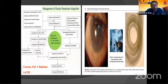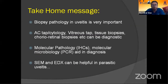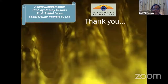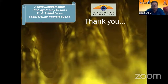Professor Rao et al. has shown that various clinical examination and investigative procedures are helpful for ocular inflammation. Live examination of the parasite is very, very important. The take-home message: biopsy pathology in uveitis is very important. ACTF for cytology, vitreous tap, tissue biopsy, chorioretinal biopsy, et cetera can be diagnostic. Molecular pathology, particularly immunohistochemistry, and molecular microbiology, particularly PCR, aid the diagnosis. Scanning electron microscopy with EDX can be helpful in parasite identification. I would like to acknowledge Professor Biswas, Professor Islam, and SSN Lab. Thank you so much, and thank you for giving me extra time.